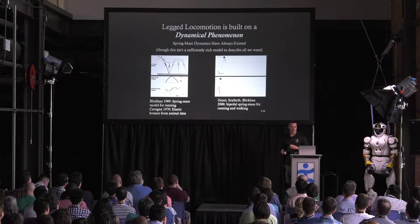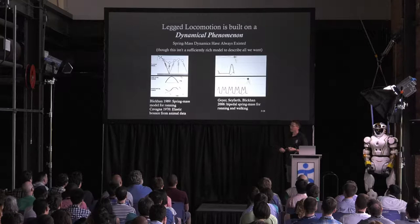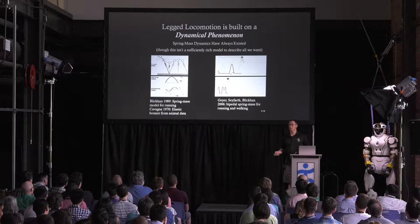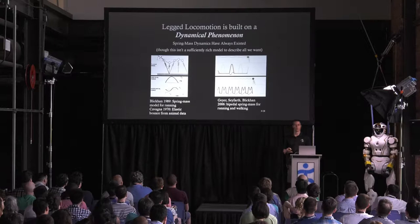I think legged locomotion is like that too. We have these simple spring-mass models that really do describe a lot of the features we see in animals, but they're not a sufficiently rich model to describe all we want in many cases. Sometimes they are, sometimes they're not. Maybe a simpler model for a controller would be good enough. It depends.